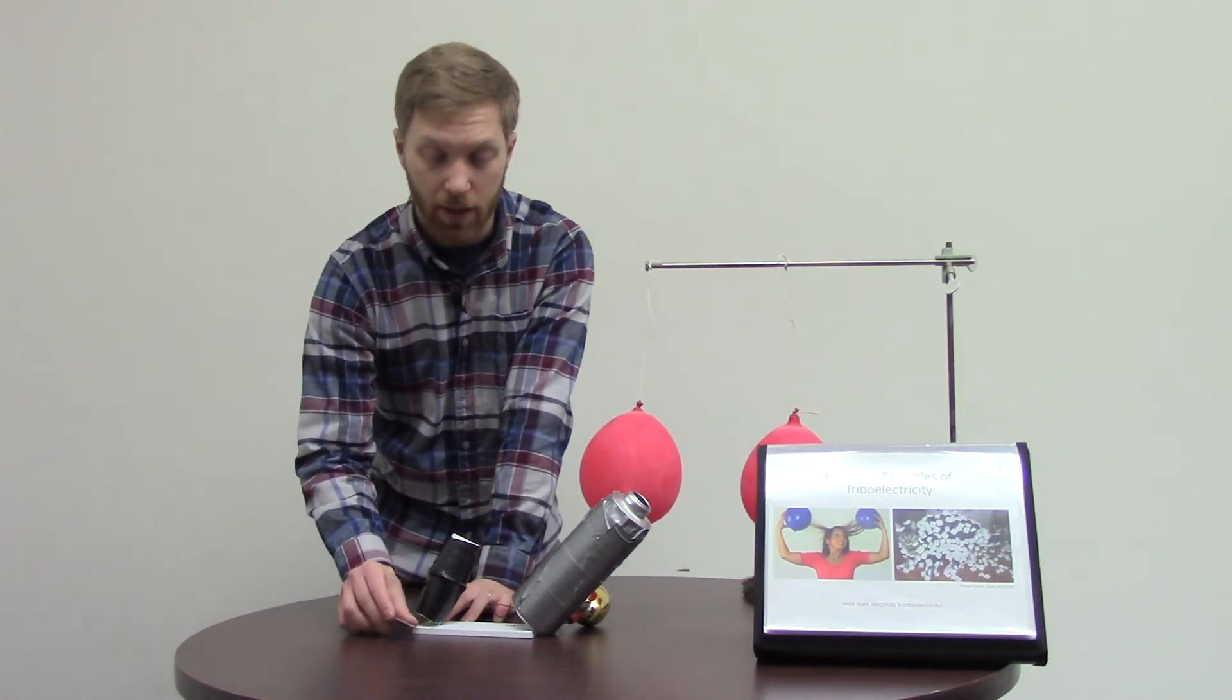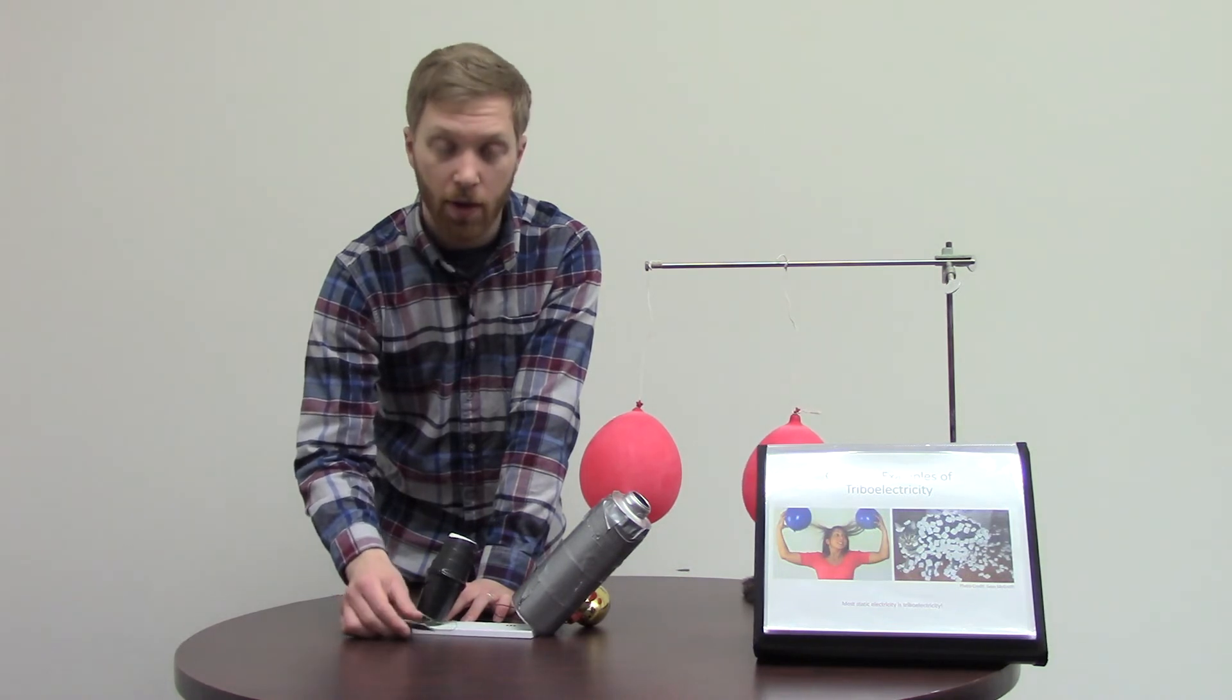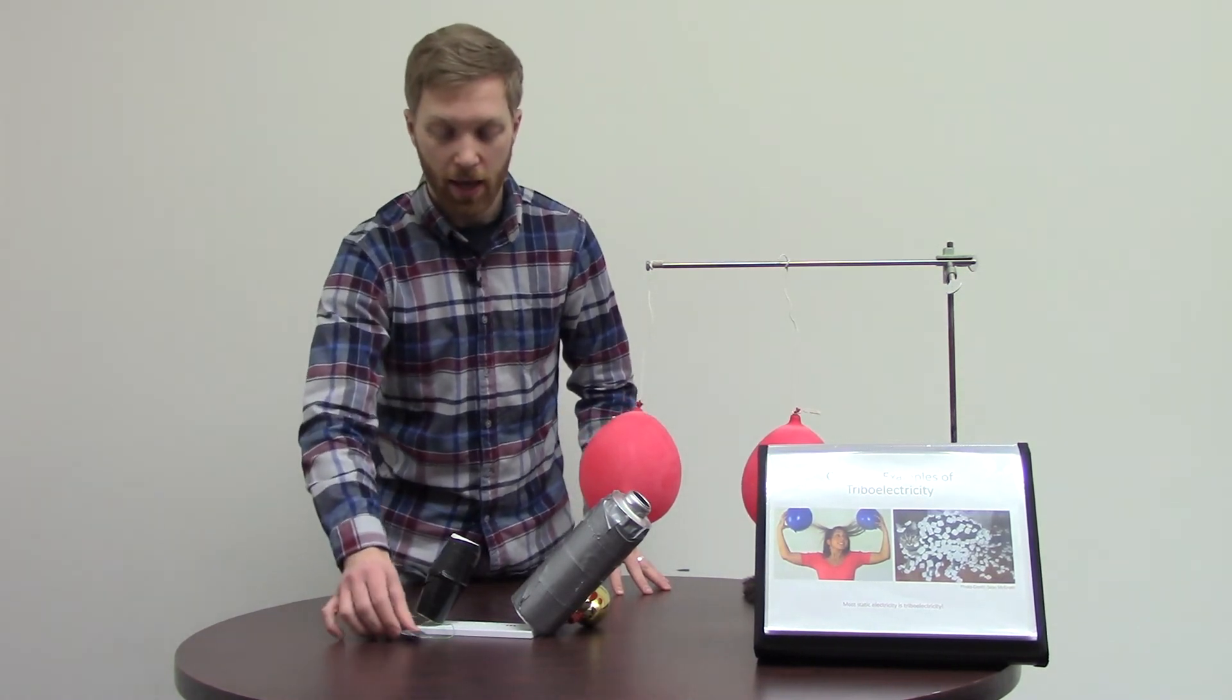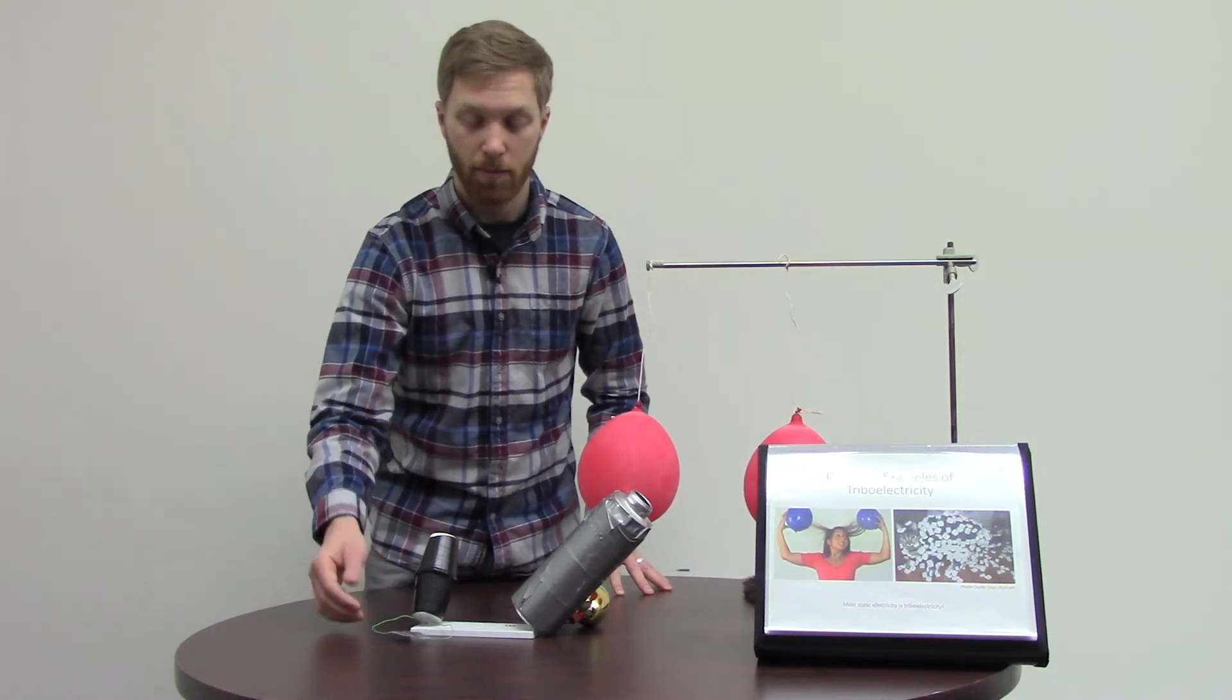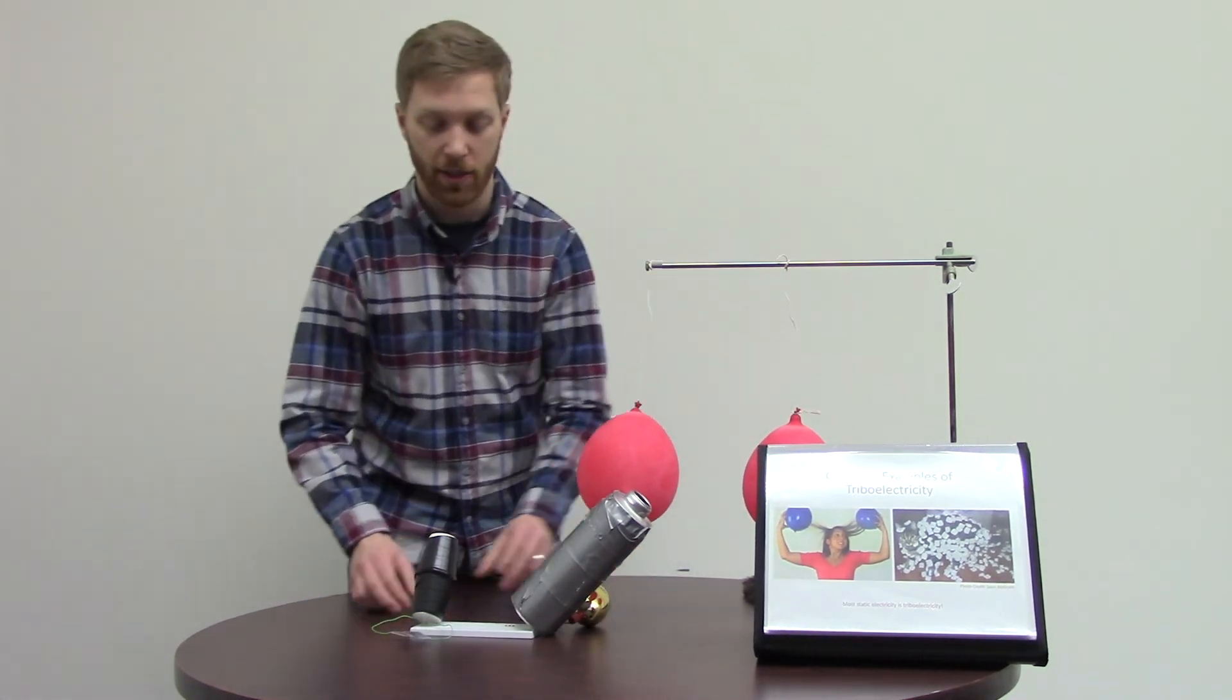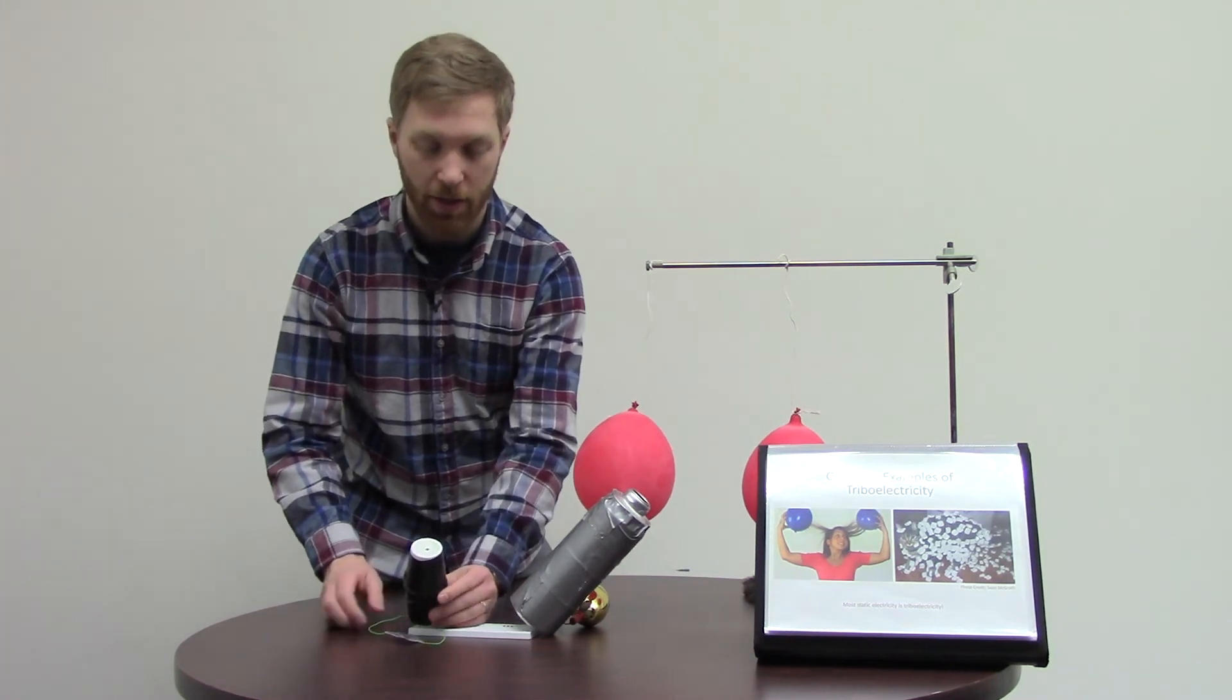This triboelectric nanogenerator is made out of two pieces of paper. On one piece of paper, I wrapped it in that same Teflon tape. And I wanted to hook some wires up to it, so I coated the backs of them with pencil graphite. Pencil graphite is able to conduct electricity, so that will allow us to get the current to flow.